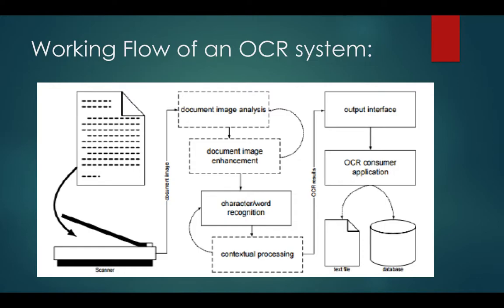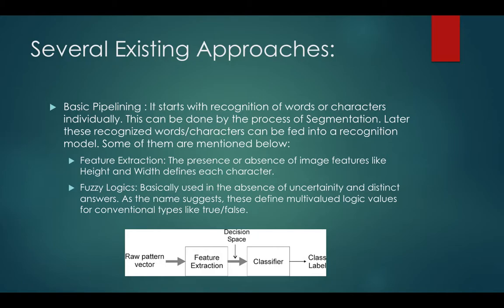Once separate words or characters are identified, we run systems to recognize each character or word, then proceed to contextual processing. While running test data, we match it with the output of testing data already run on the system, then present it to an output interface which can be fed into an OCR consumer application such as a database or text file. The several existing approaches in OCR begin with segmentation — recognizing words or characters individually.